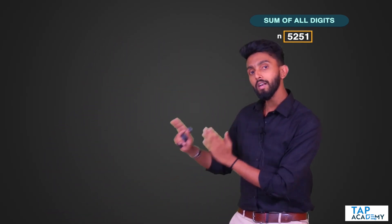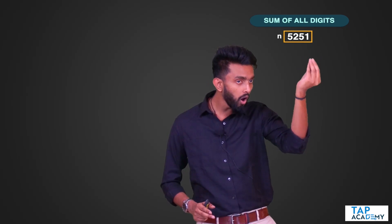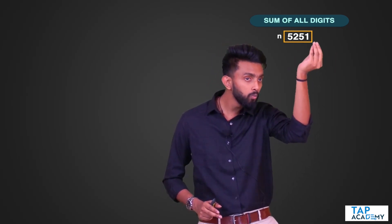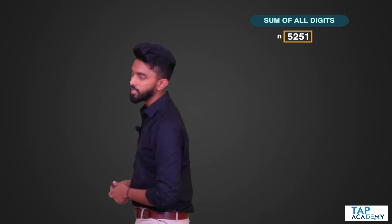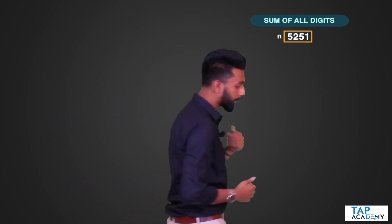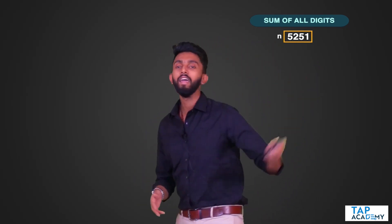In the last class we established that to remove the last digit you divide the number by 10. If you want to get the last digit — not eliminate it, but retrieve it — you use modulo 10. Now, recursively, let us try to write this.